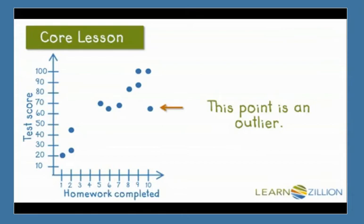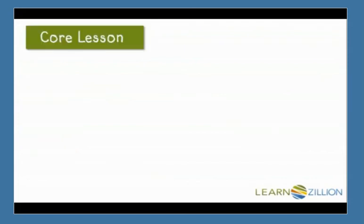This outlier shows us that a student completed all 10 of the assignments. However, they only made a 60 on their test. Let's think of some possible reasons for this.